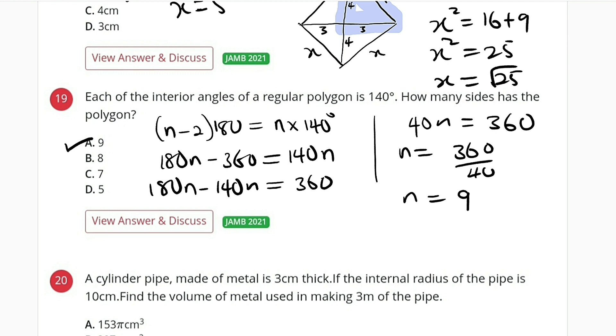So option A. That polygon with 140 degrees each interior angle has 9 sides.